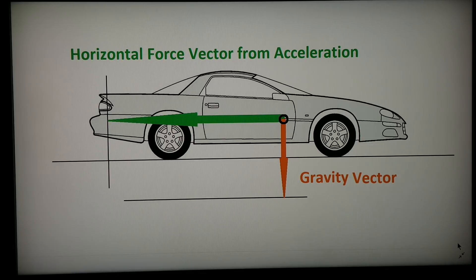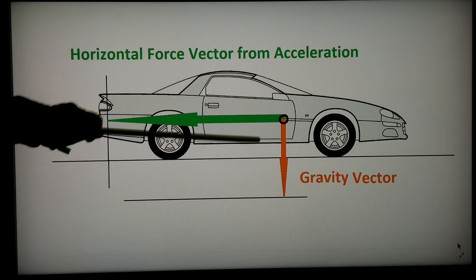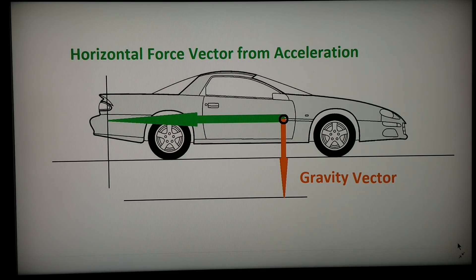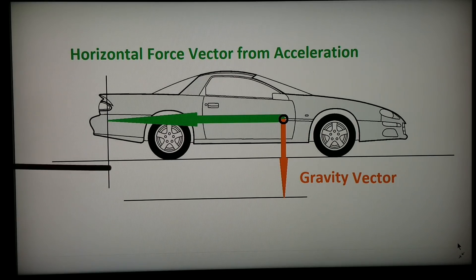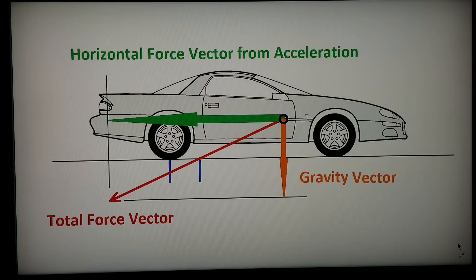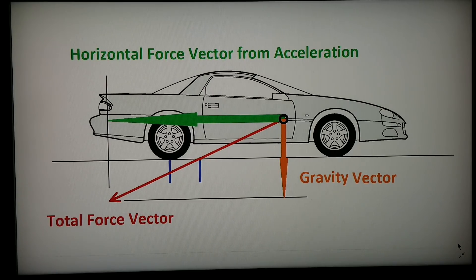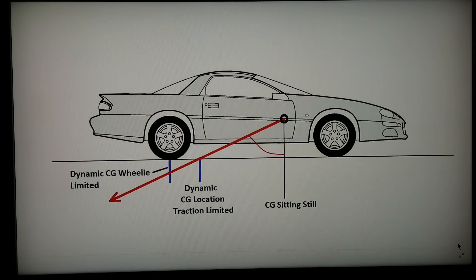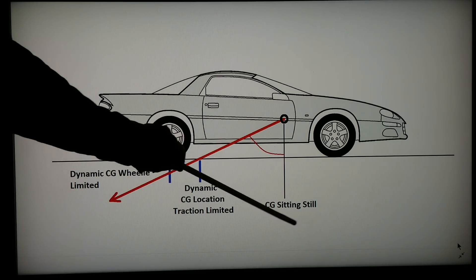The forces of a car accelerating can be broken down into two vectors: the gravity vector, and the horizontal force vector from acceleration. This seems a little counterintuitive, and it's pointing to the back. In reality we also have a force equal and opposite pushing forward on the bottom of the tire, but for our purposes we're going to draw it to the back. It's these two forces that add up to the total force vector, which comes down at an angle. Wherever that red line goes through the ground will give you the new center of gravity of the car as the tires know it. This red vector would be straight down when the car is sitting still.